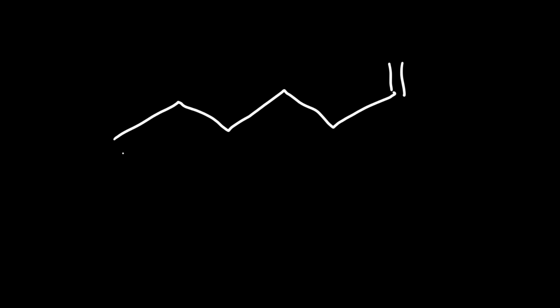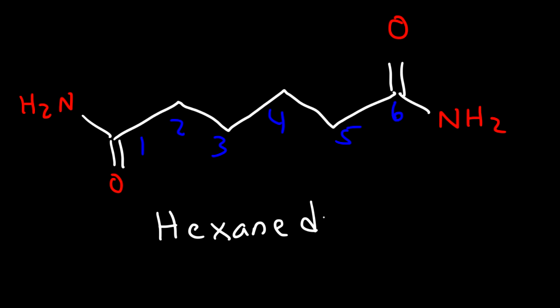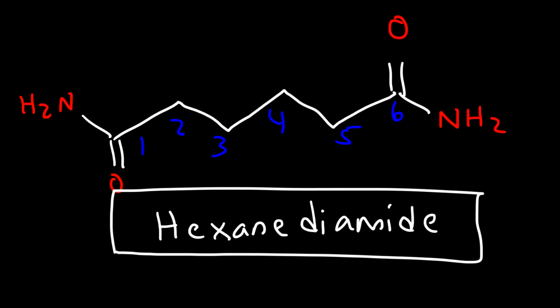For the last example we have two amide functional groups attached to the molecule. Counting the carbons — one through six — we have a hexane carbon chain with two amide groups, so this is called hexanediamide. That's it for this video; hopefully it gave you a good introduction to naming amides.